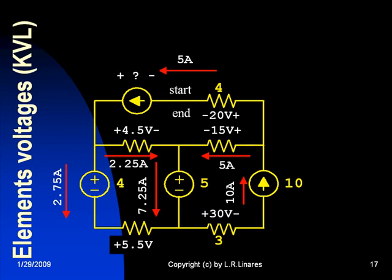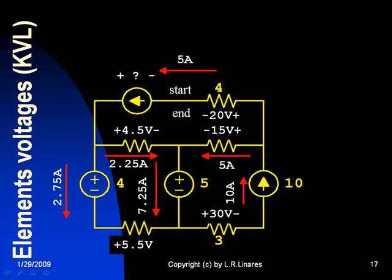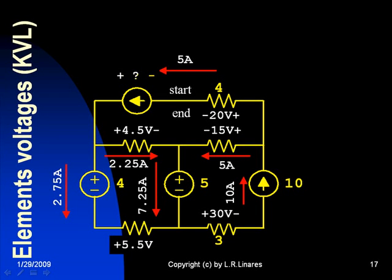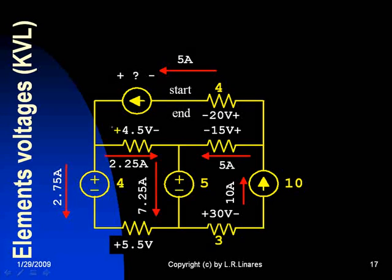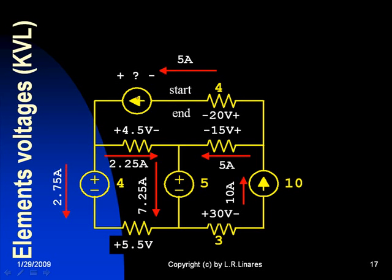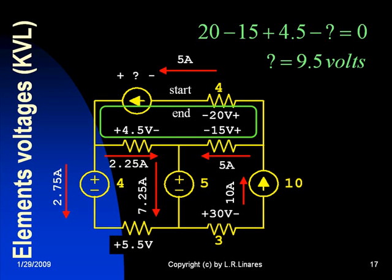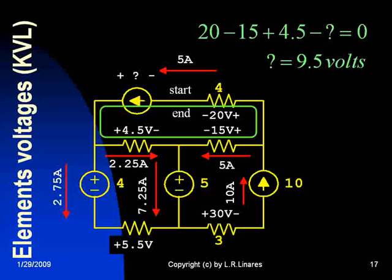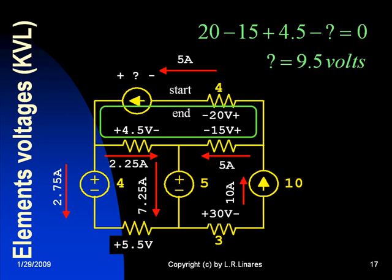Now let's do the same for this source. I am assuming the polarity for the voltage in this source at the top to being plus minus as shown. That is arbitrary for me, I may get a negative number at the end. And now I choose a KVL loop where I know all the voltages minus that one. I write a KVL equation, and I solve for the question mark, and I get that that voltage is 9.5 volts.